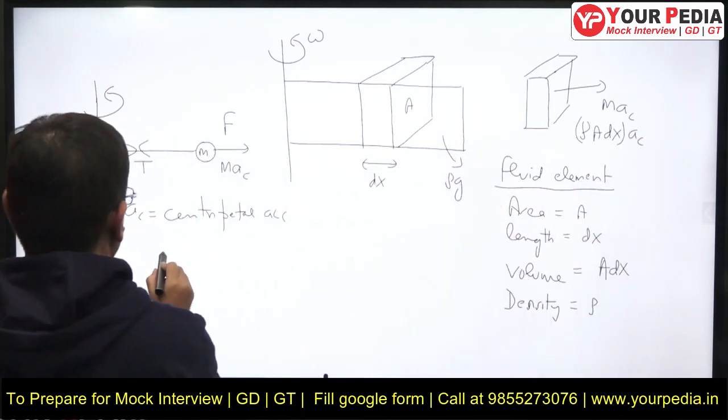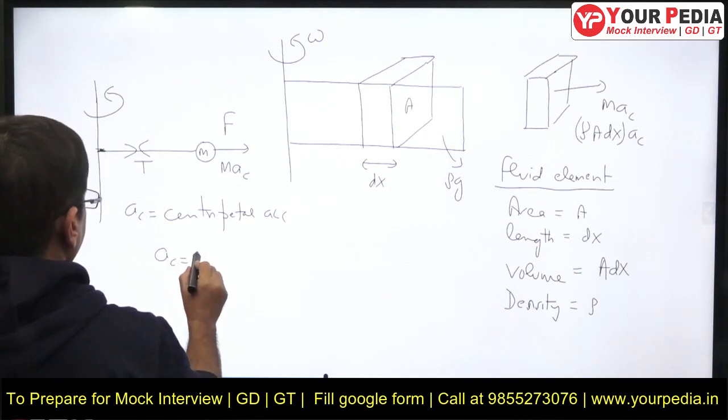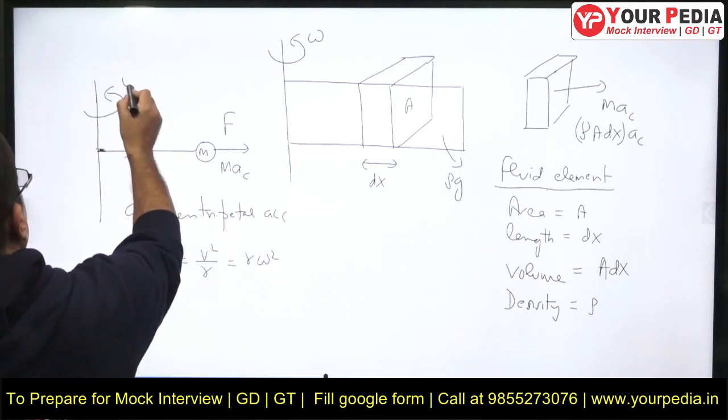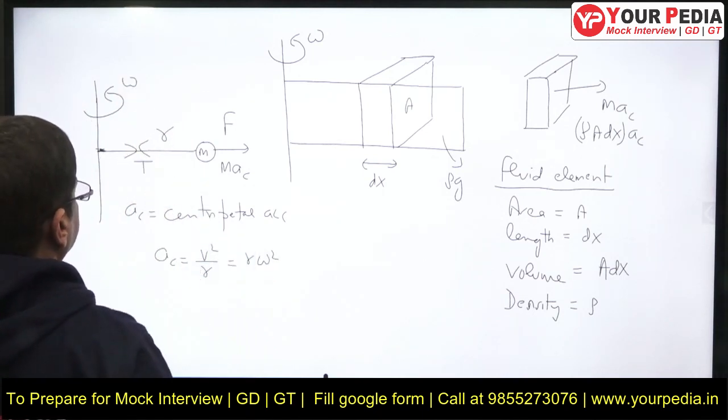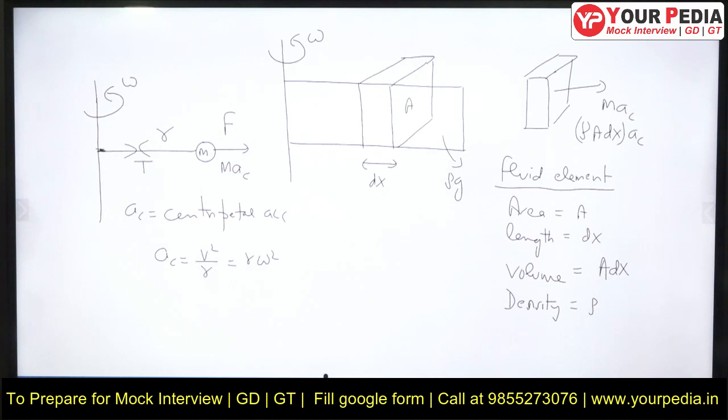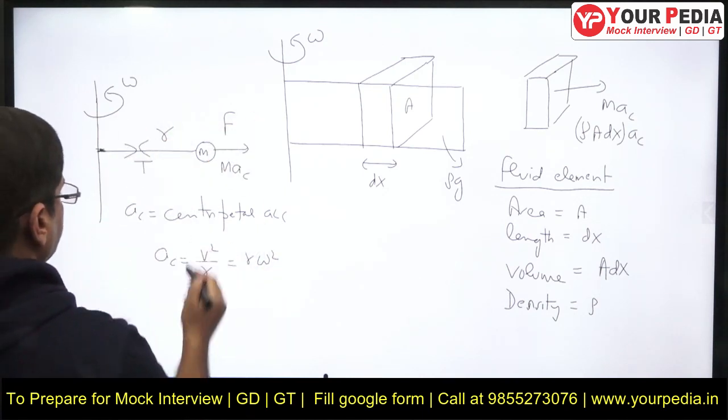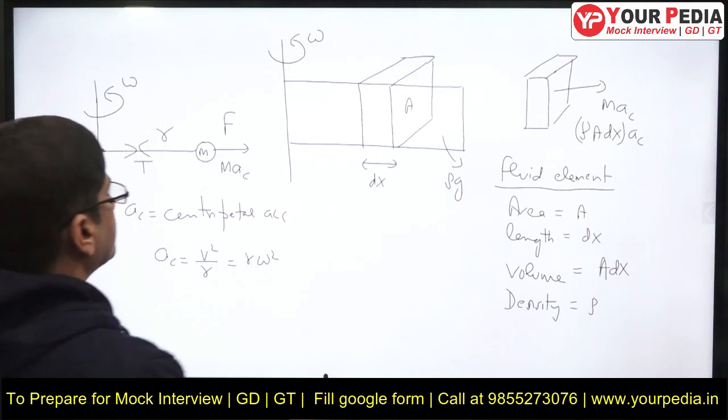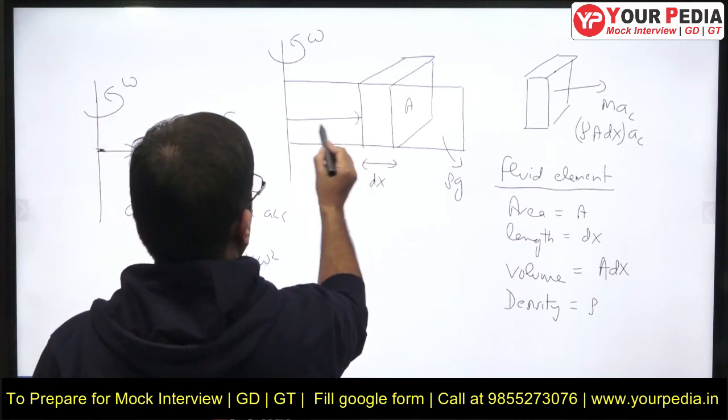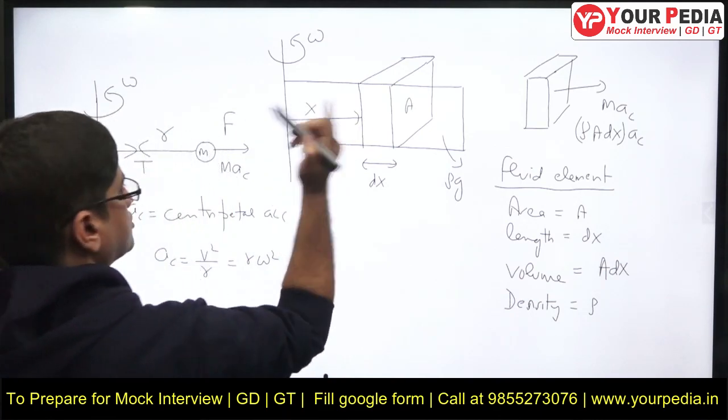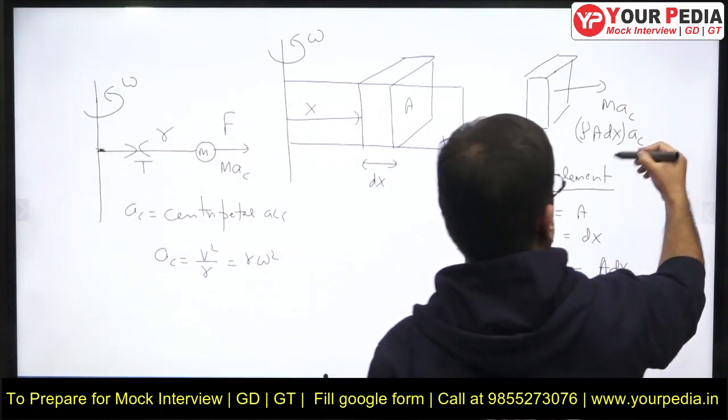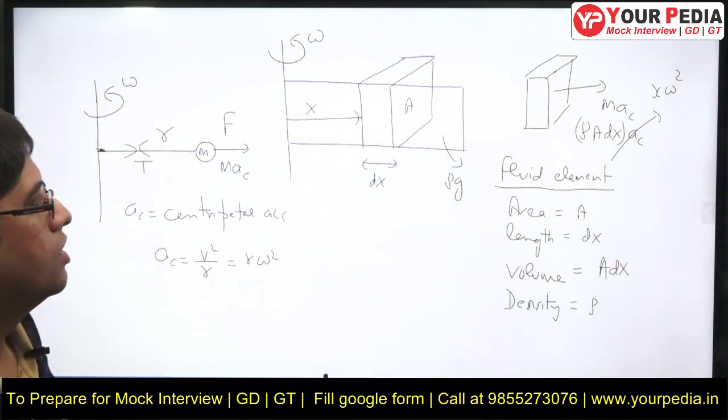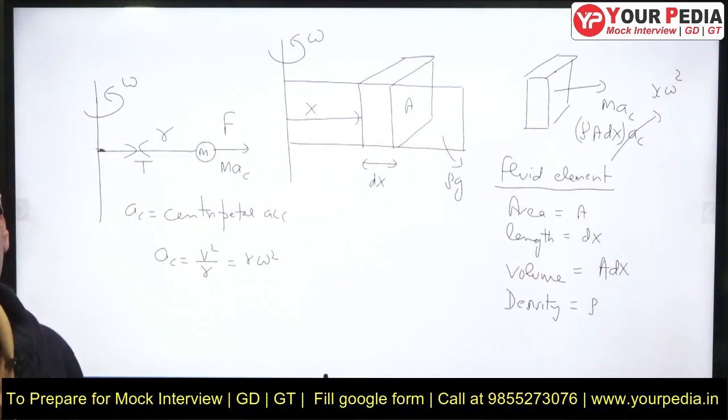Any idea what is a_c? a_c is V squared by R or R omega squared. This is omega, and this is a radial distance. So V equals R omega for tangential velocity, so it must be rotating at tangential velocity V. So centripetal acceleration is R omega squared. But what is R here? This fluid element is at distance X from the axis of rotation. So this particular a_c is X omega squared. This is the force acting on this fluid element of length dx.